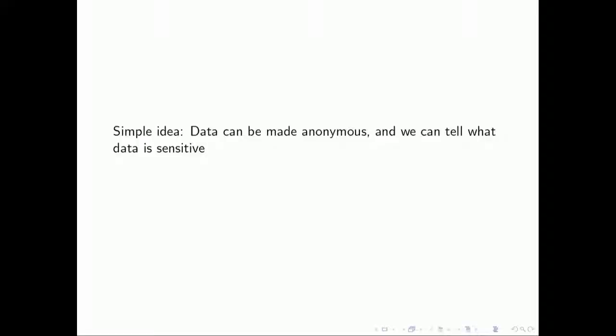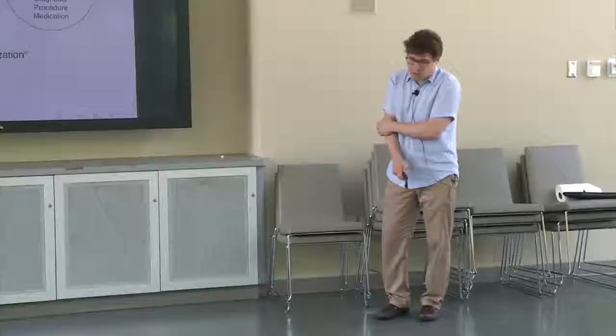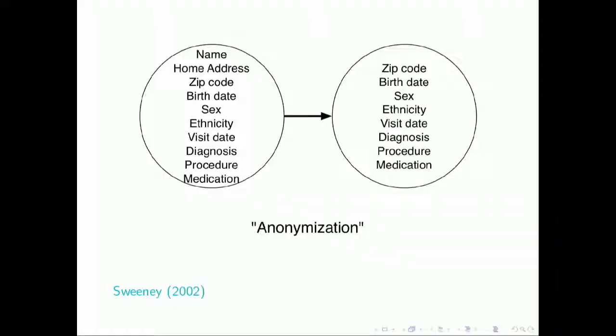So the simple idea, I think, is that data can be made anonymous, and we can tell what data is sensitive and what is not sensitive. So I think everyone kind of agrees, if the data is sensitive, then we need extra protection. So that requires us to be able to know what is sensitive and what is not sensitive. And then I think there's a belief, if we take off all the PII, personally identifying information, then the data is safe. And I think both of these ideas are wrong.